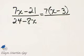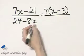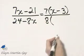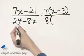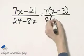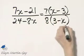Now let's completely factor the denominator. In the denominator, these two terms have a common factor of 8, and when I factor that out, I'm left with 3 minus x.